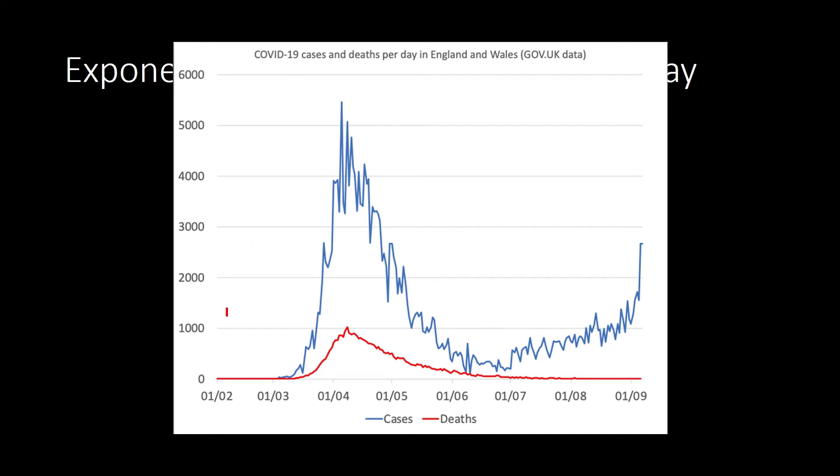Look at this. So this one is the number of COVID-19 cases and deaths per day in England and Wales. And from January 3 to January 4, we are seeing here a rapid increase in the reported cases of COVID-19 infection in one day. In one day, it goes from zero to 3,000. In one day.